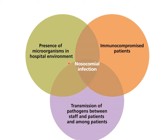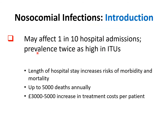Three factors contribute to the prevalence and incidence of nosocomial infections. Firstly, there is presence of microorganisms in the hospital environment and lots of immunocompromised patients due to a variety of underlying conditions, and the risk of transmission of pathogens between staff and patients and amongst patients. Nosocomial infections may affect 1 in 10 hospital admissions, and prevalence is twice as high in ITUs, and the situation has been particularly complicated in the face of the COVID-19 pandemic.